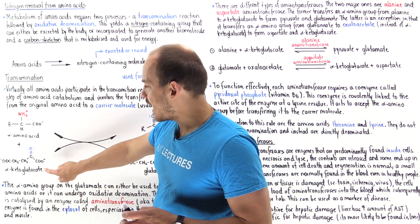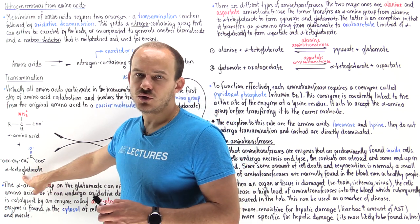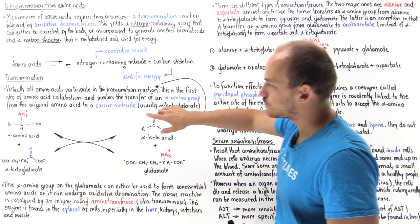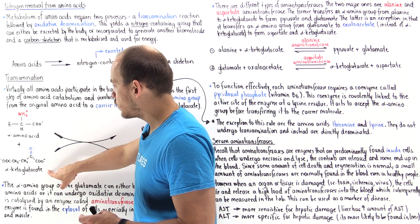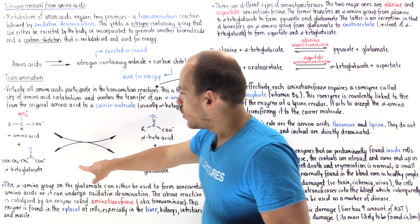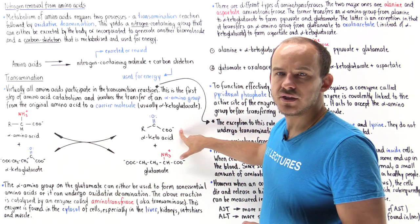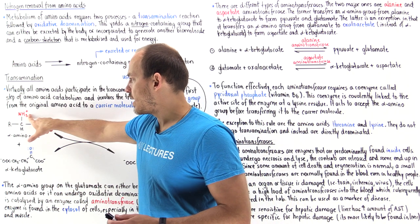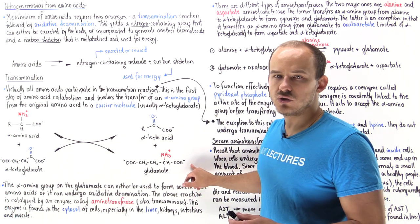Almost always, the carrier molecule that accepts the nitrogen-containing group is alpha-ketoglutarate — we'll talk about the exception in just a moment. After we transfer this red amino group onto the alpha-ketoglutarate, we form an alpha-ketoacid and a glutamate. When we remove the nitrogen from the alpha-amino acid, we form the alpha-ketoacid. When we give the red amino group to the alpha-ketoglutarate, we form a glutamate.